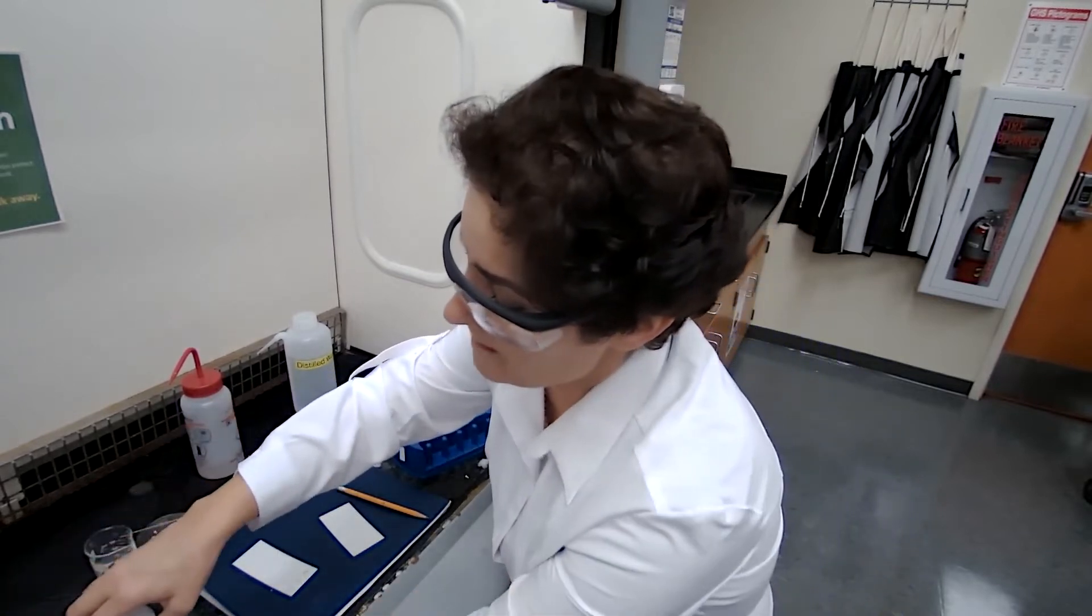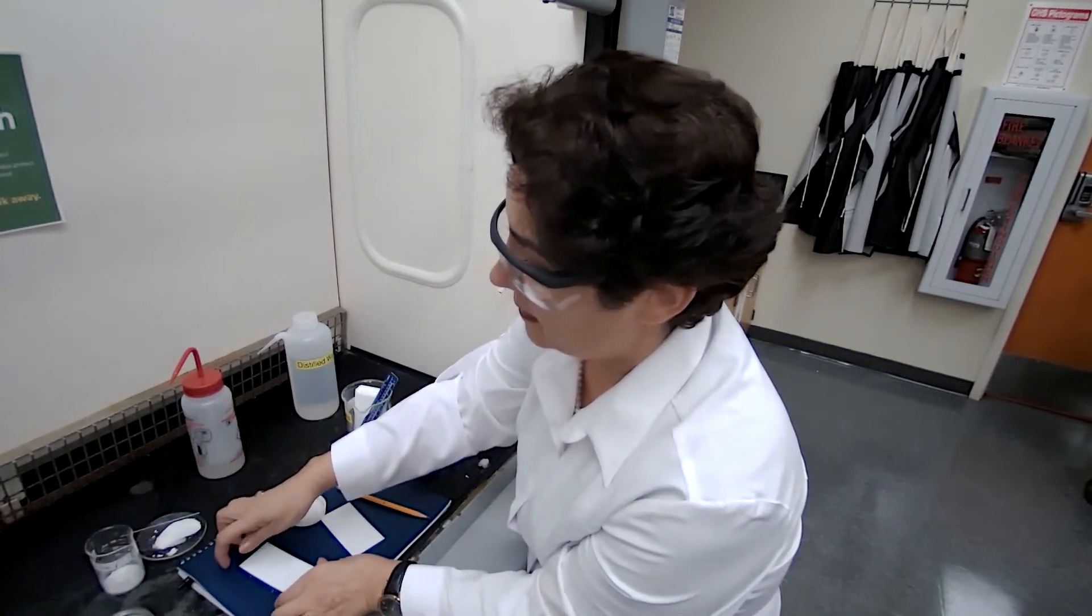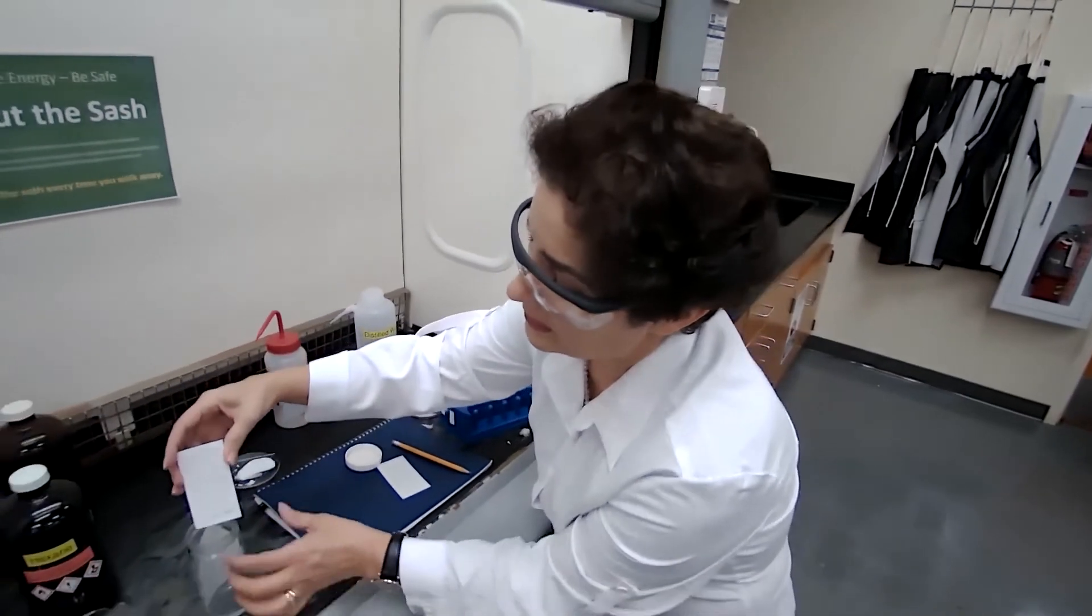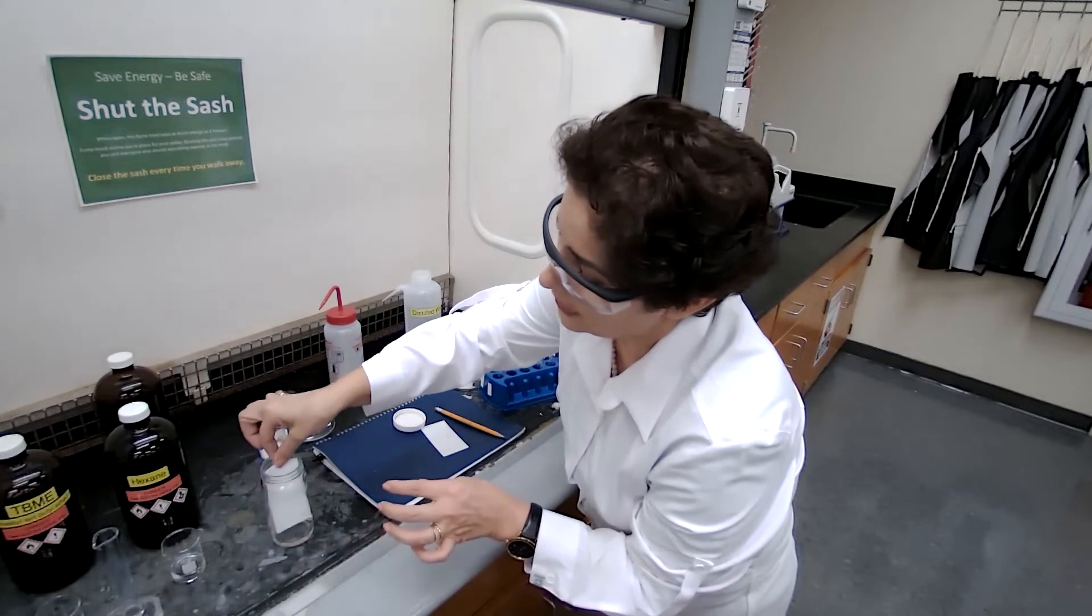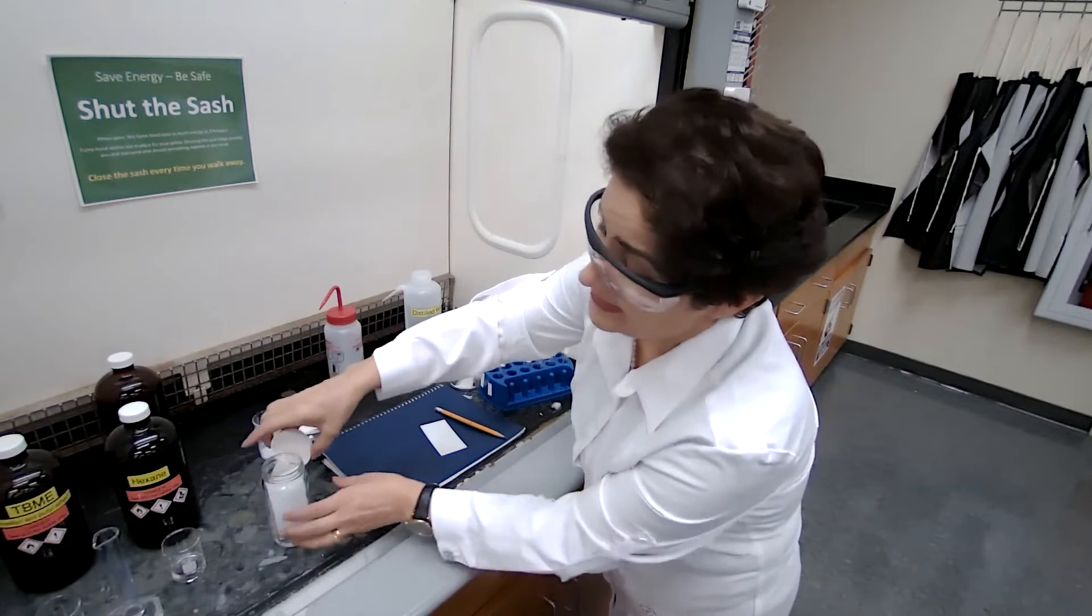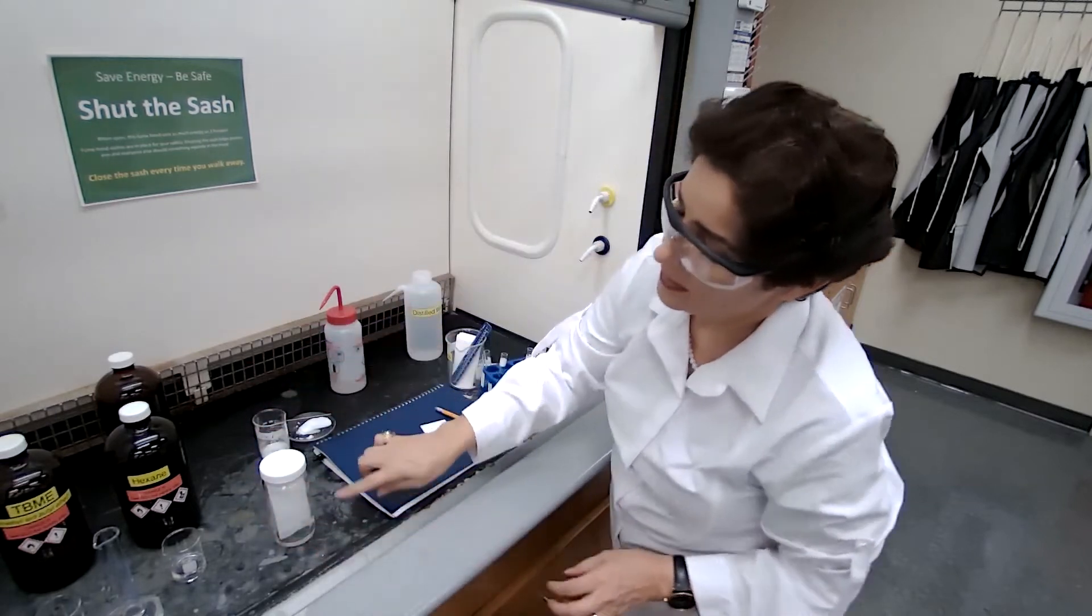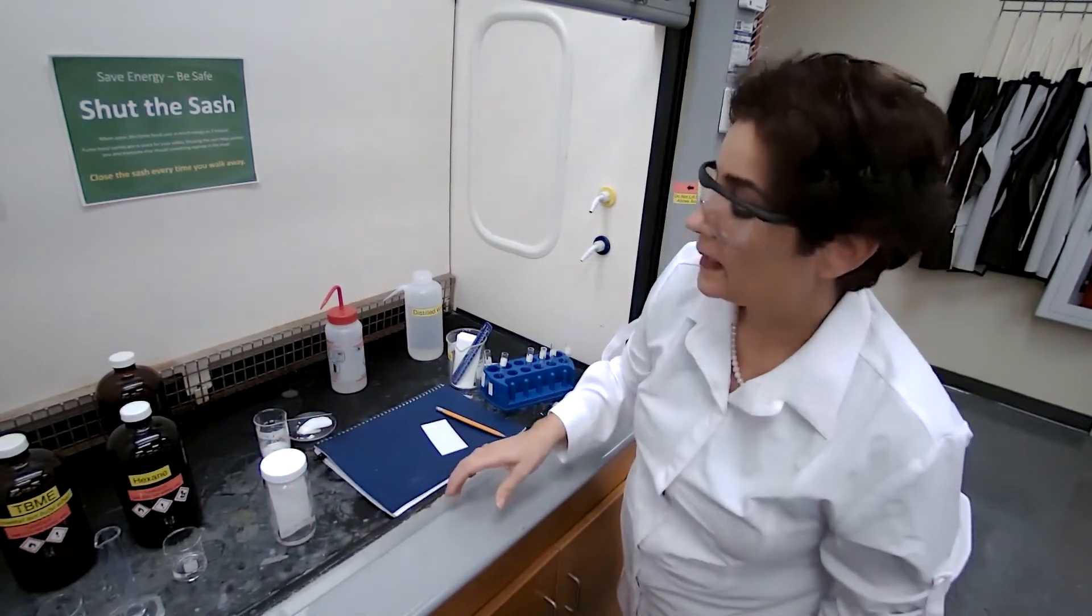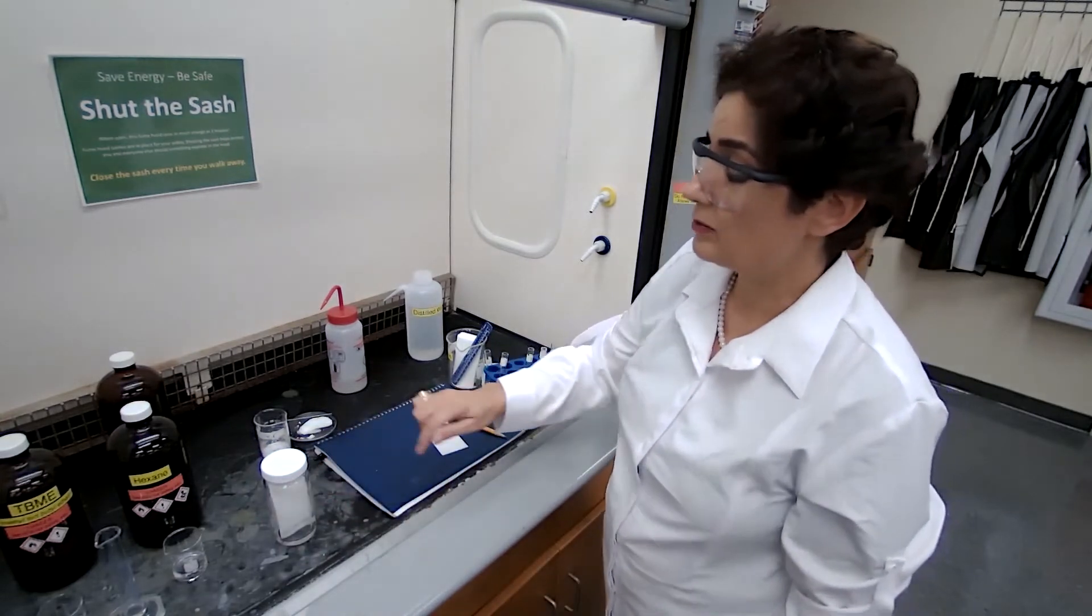And now we are going to place in developing chamber, touching the side only, carefully placing the developing chamber and wait for it to reach the top of the TLC plate about half an inch from the top of the TLC plate. So we are waiting for that to happen. Again, the video will be paused. I'll come back when it's almost to the top.